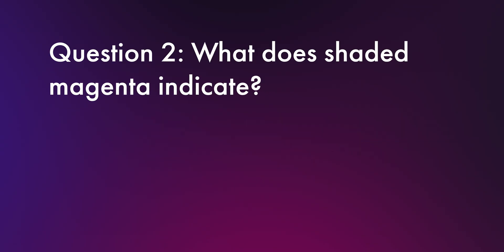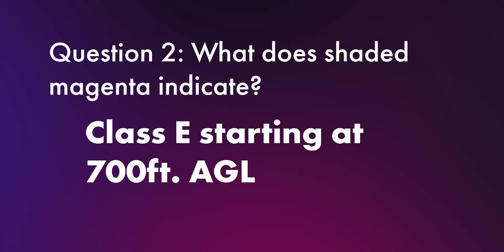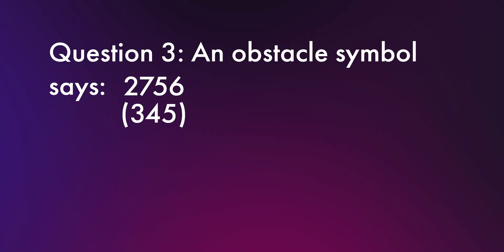Question two: what does shaded magenta indicate? The answer is Class E starting at 700 feet AGL. Question three: an obstacle symbol says 2756 over 345. What does that mean? The answer is that the top of the obstacle is 2,756 feet MSL and it's 345 feet AGL.